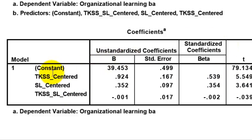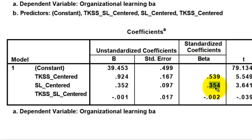Number two, your SL centered. This is a large beta weight, so in other words, 35% of the variance in the DV can be roughly explained by SL variance. And again, that too is significant.